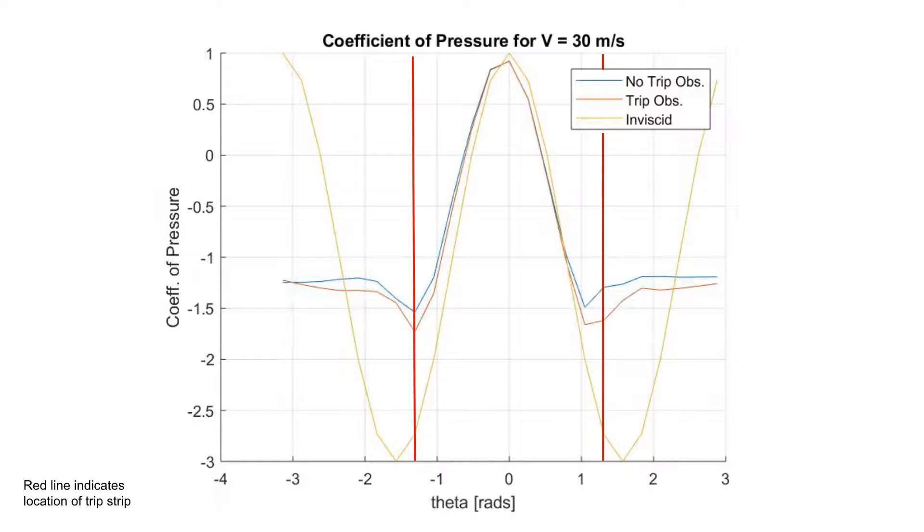Our 30 meters per second graph exhibited the largest values for the coefficient of pressure. This is because the pressure differential across the cylinder is at its highest for this experiment. The forces exerted on the cylinder directed towards the airflow is the largest due to the increasing dynamic pressure. The largest pressure readings are located at the stagnation point, while the lowest occur where the flow separates. The coefficient of pressure is relatively constant in the separated region.